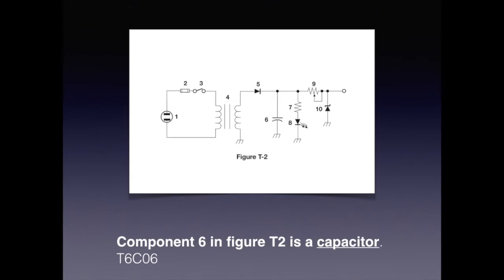The components in Figure T2 are as follows. Number 1 is a receptacle. Number 2 is a fuse. Number 3 is a switch. Number 4 is a transformer. Number 5 is a diode. Number 6 is a capacitor. Number 7 is a resistor. Number 8 is an LED or light emitting diode. Number 9 is a variable resistor or potentiometer.